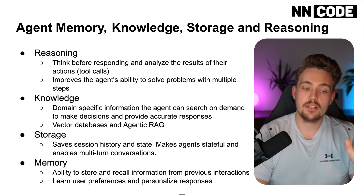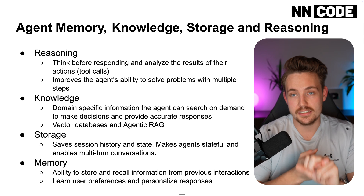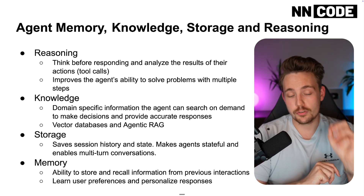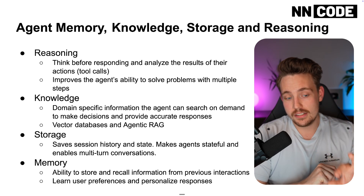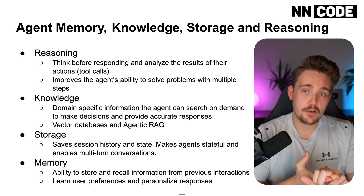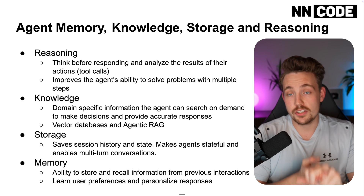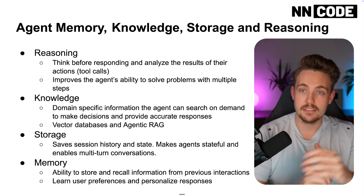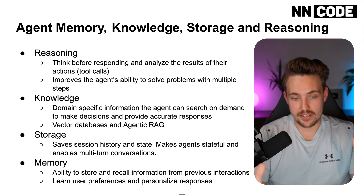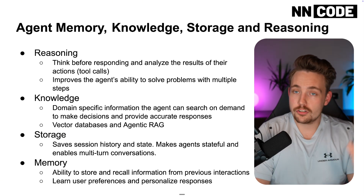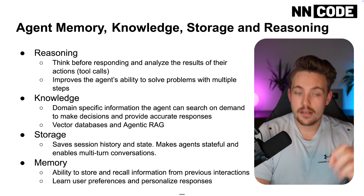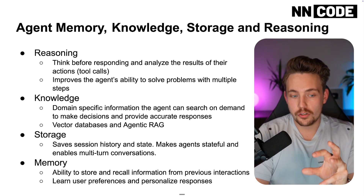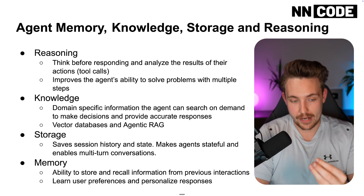This takes us to vector databases and agentic RAG. When we store it — we're going to cover this in another video with vector databases because we need to cover it in detail. Vector databases are very essential because they make it much faster and easier for agents to access a ton of information. Beyond traditional RAG, we also have agentic RAG, where the agent does the reasoning and figures out what domain-specific information it actually wants to extract.